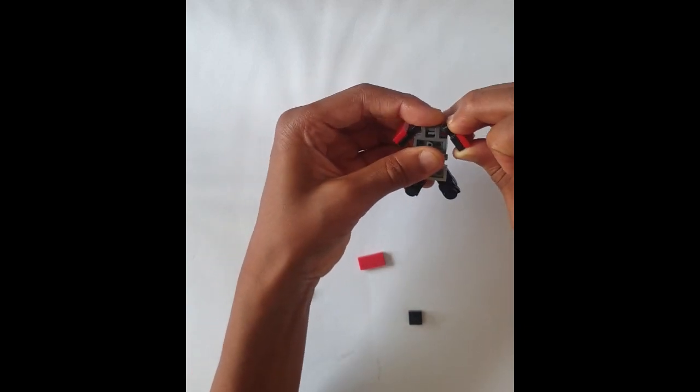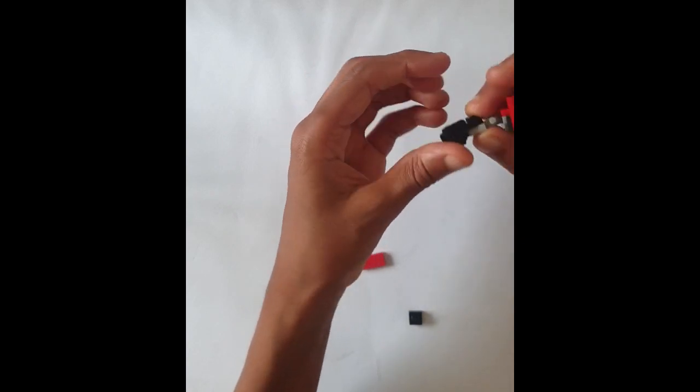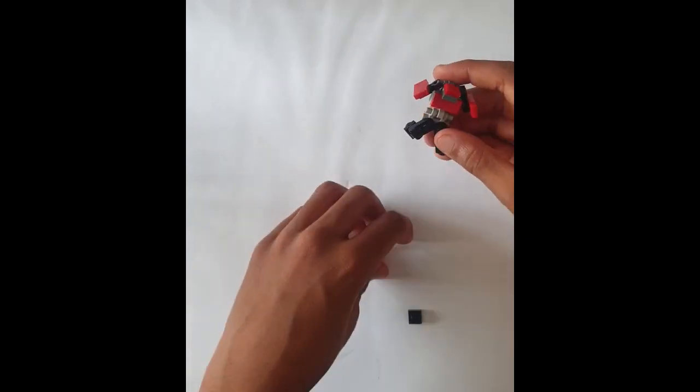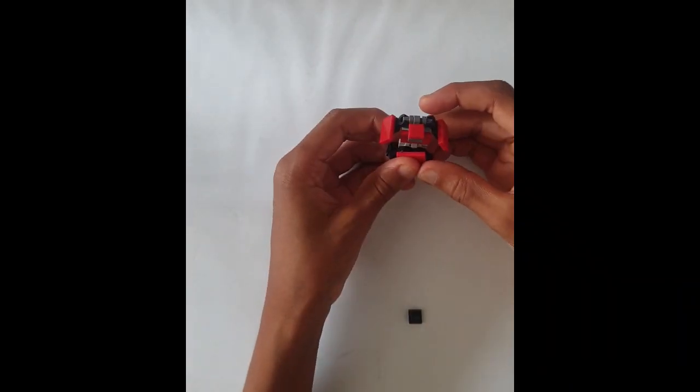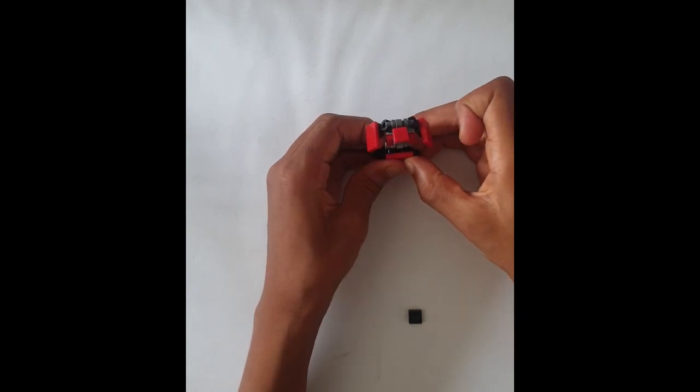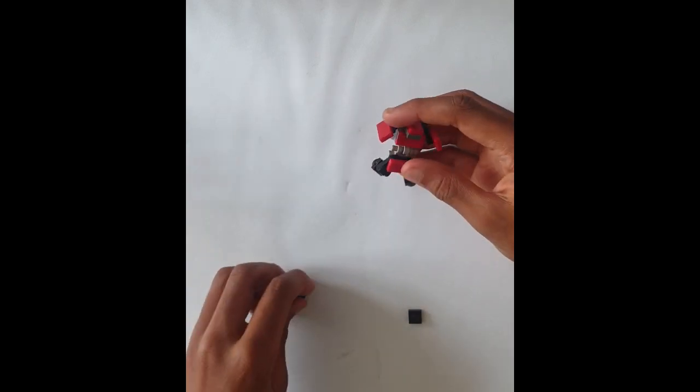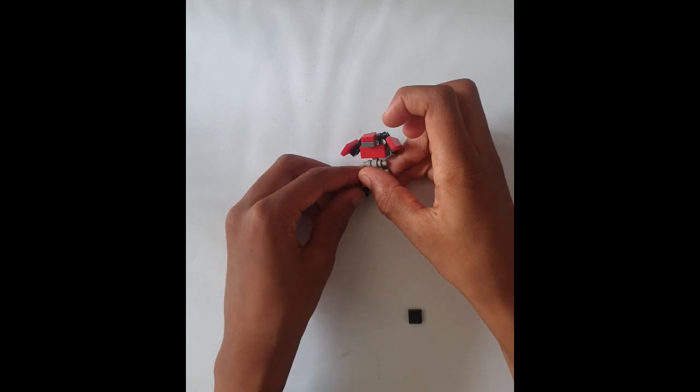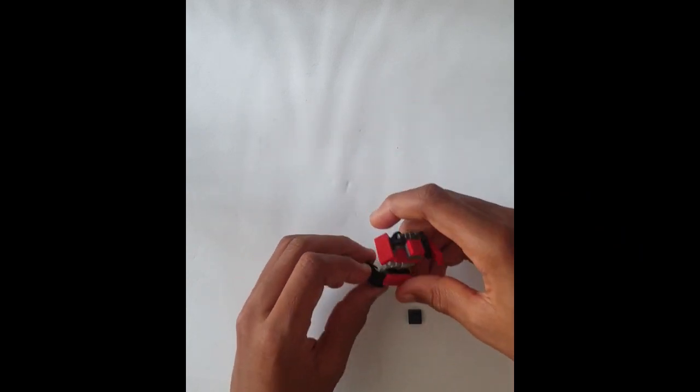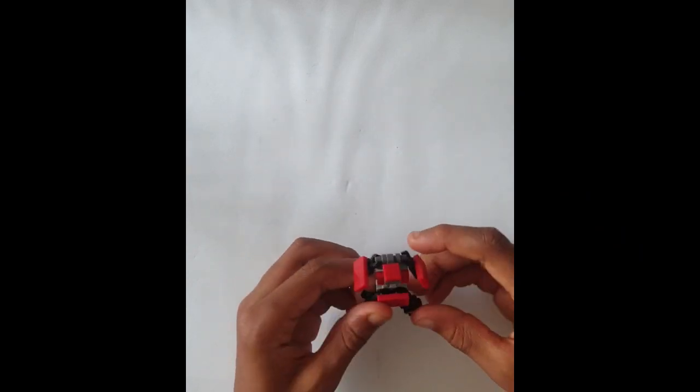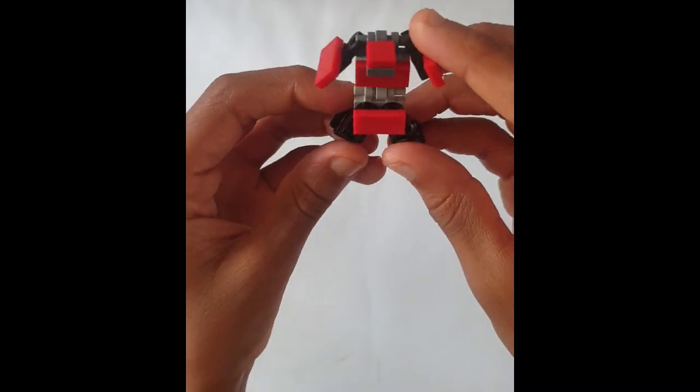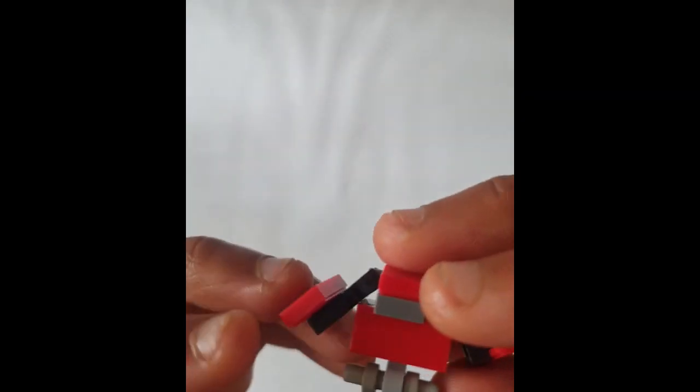If you think it looks cool that way, you can just leave it like that. Put a 1x2 tile on the end, then put a 1x1 plate with another one on the side. And then you've got your circle transformer.